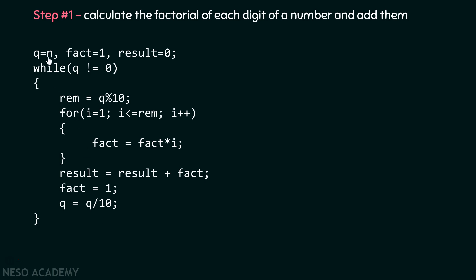Here you can see the code. Initially, q is set equal to n, our actual number. We have a fact variable initialized to 1 and a result variable initialized to 0. Inside the while loop, we check whether q equals 0. If not, we compute remainder = q mod 10, which gives us the last digit of the number.